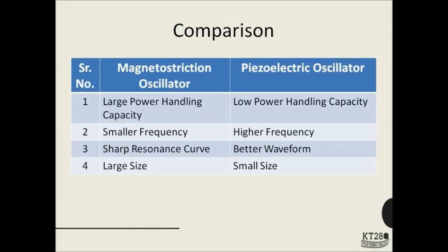Here are some points comparing magnetostriction and piezoelectric oscillators. The magnetostriction oscillator can handle large power whereas the piezoelectric oscillator is a low-power-handling device. The magnetostriction oscillator can produce ultrasonic waves of relatively smaller frequency, whereas the piezoelectric oscillator can produce much higher frequencies. The magnetostriction oscillator has a sharp resonance curve, meaning the tank circuit frequency must be tuned carefully to be near the natural frequency of the ferromagnetic rod; the piezoelectric oscillator is more tolerant of slight deviations from resonance. Finally, the magnetostriction oscillator is larger in size than the piezoelectric oscillator.